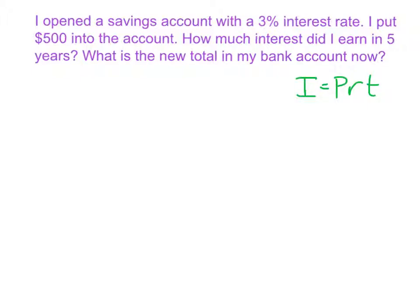Now that we have our formula of I equals PRT and we know what everything stands for, let's see if we can apply it. Our first problem says that I opened a savings account with a 3% interest rate. I put $500 into the account. How much interest did I earn in 5 years? And what is the new total in my bank account now? So we're first going to look at the question underlined in blue. How much interest did I earn in 5 years is our first question.